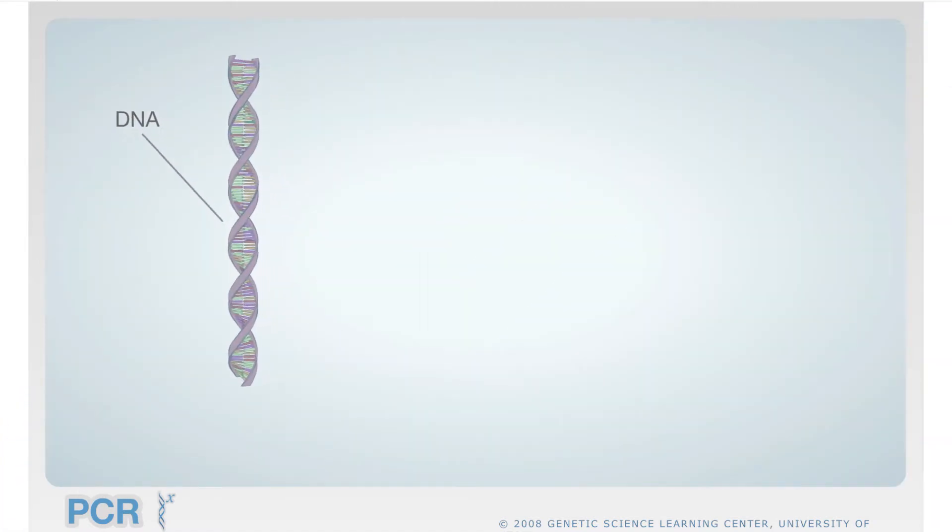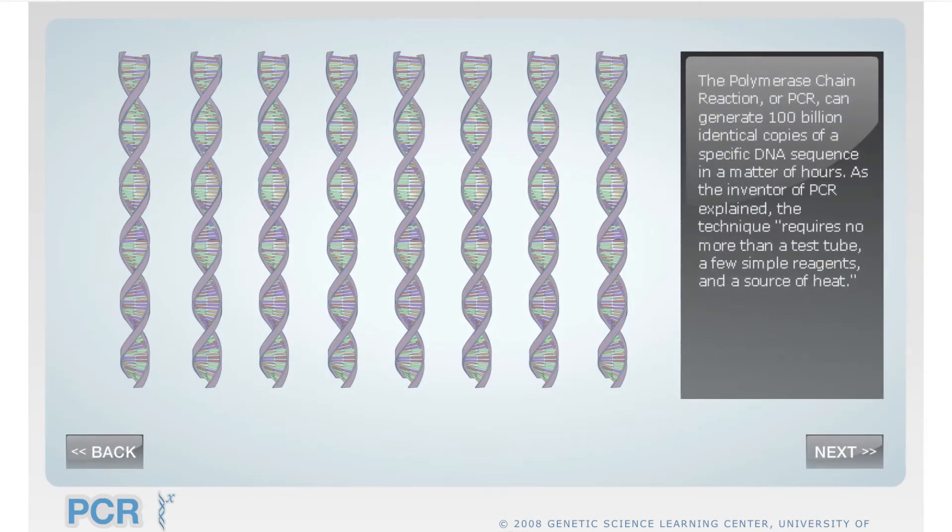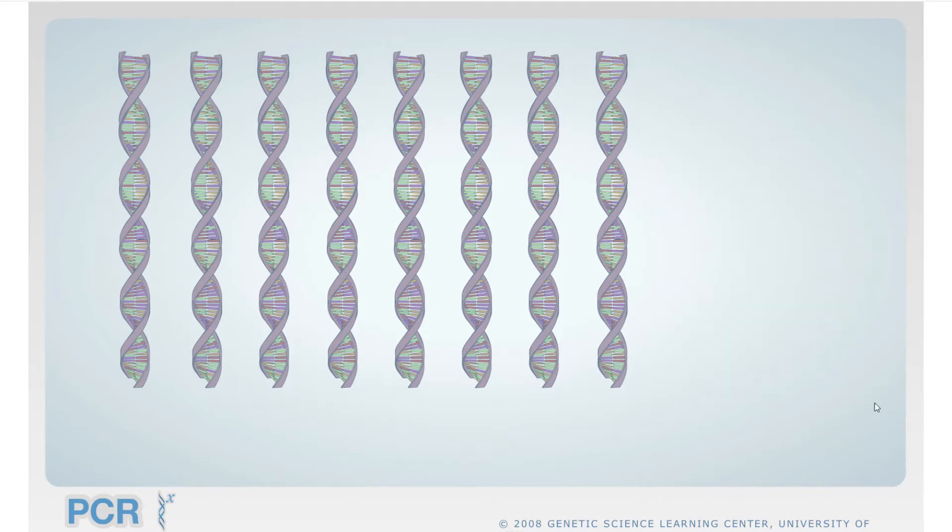As you can see here, PCR can make several billion copies of specific DNA sequences by simply using a test tube, source nucleotides, a replication enzyme to work with, and heat.